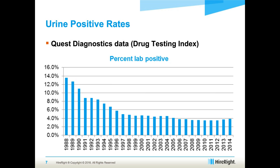Looking back at data from 1988, the positive rate was up near 14% in urine drug screening — that's the laboratory positive rate. Year after year thereafter it just fell, and now it's in the 4% range in 2014. That begs the question: are people just using fewer drugs in 2014 than they did in 1988? That's probably not the case. So why is the urine rate decreasing so much?